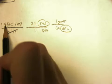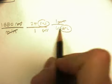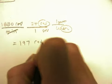So then you just take 1880 times 2 pi, divided by 60. And you get 197, and that's radians per second.